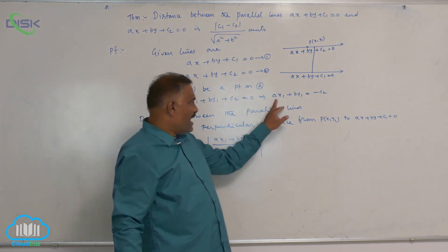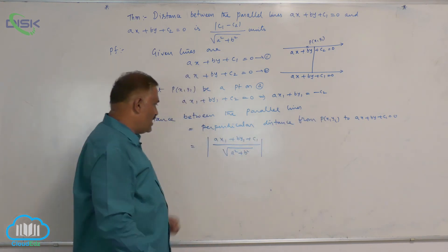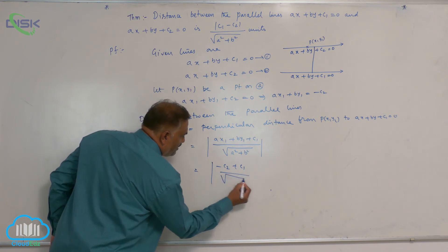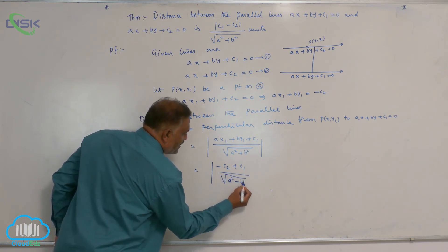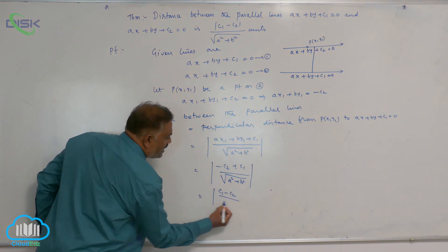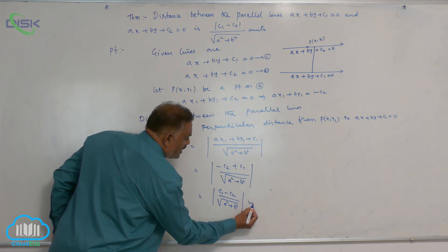But AX1 plus BY1 value is nothing but minus C2. Let us write here, modulus of minus C2 plus C1 divided by A square plus B square. This is nothing but modulus of C1 minus C2 by root of A square plus B square units.